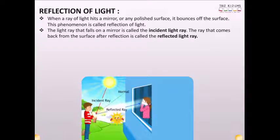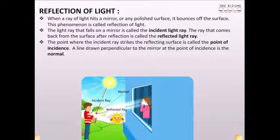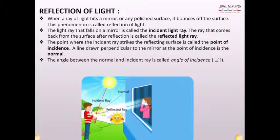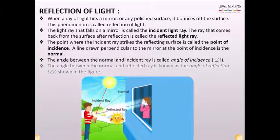The light ray that falls on a mirror is called the incident light ray. The ray that comes back from the surface after reflection is called the reflected light ray. The point where the incident ray strikes the reflecting surface is called the point of incidence. A line drawn perpendicular to the mirror at the point of incidence is the normal. The angle between the normal and incident ray is called angle of incidence, angle I. The angle between the normal and reflected ray is known as the angle of reflection, angle R.